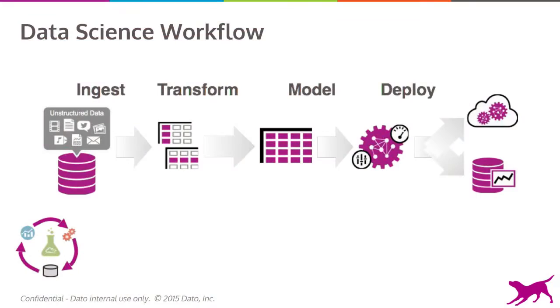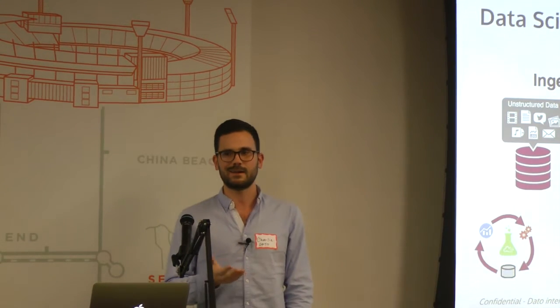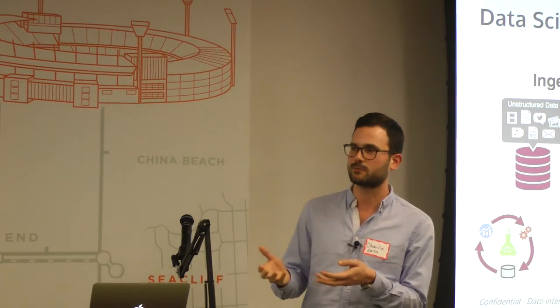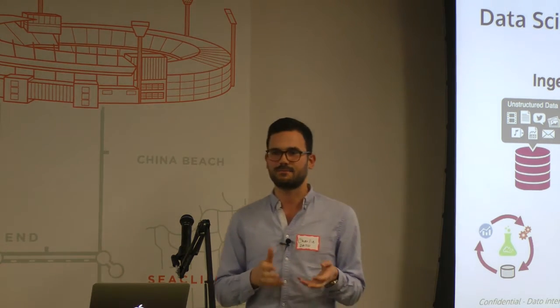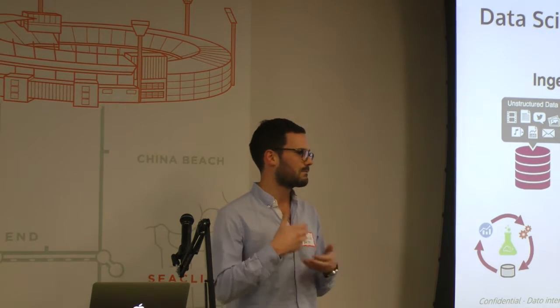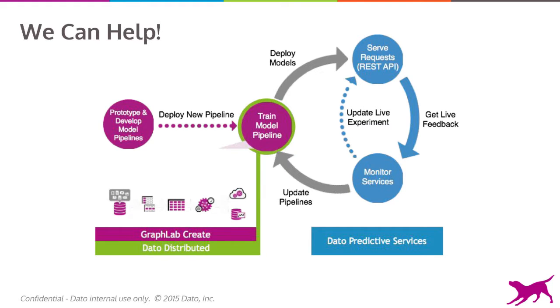You've probably all seen this data science workflow many times. The workflow is decomposed of many parts: data ingest, then you take all that raw unstructured data, transform it to something useful, build a machine learning model, evaluate it, deploy it as a service, and so on. That workflow is not linear at all — it's very iterative, back and forth. We at Dato have offerings for every step of that workflow to make your work a lot easier.